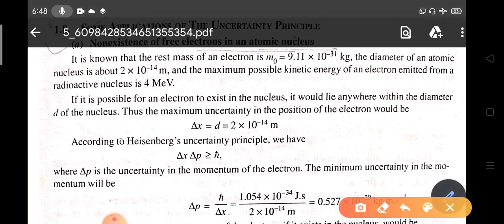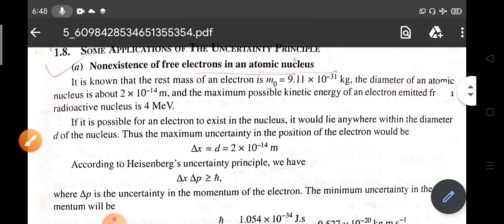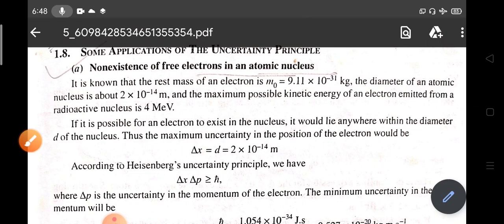We all know that Heisenberg's uncertainty principle is Δx · Δp ≥ ℏ. Now let's find out how to demonstrate the non-existence of free electrons in an atomic nucleus.